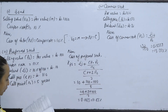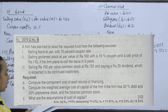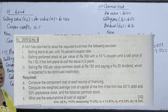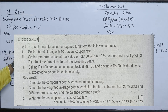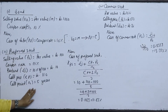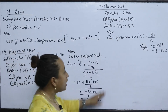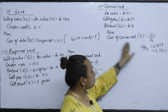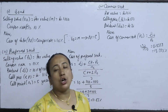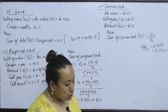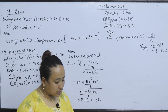The question required us to compute the component cost of each source of financing. The cost of debt (KD) is 10%, the cost of preferred stock (KPS) is 11.63%, and the cost of common stock is 13.33%.